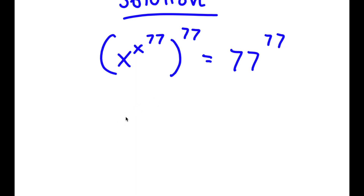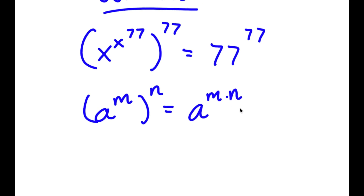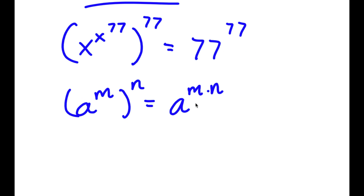Now, if I have something in the form a to the power of m to the power of n, this is the same thing as a to the power of m times n. And a to the power of m times n is the same thing as a to the power of n times m — the order doesn't matter.